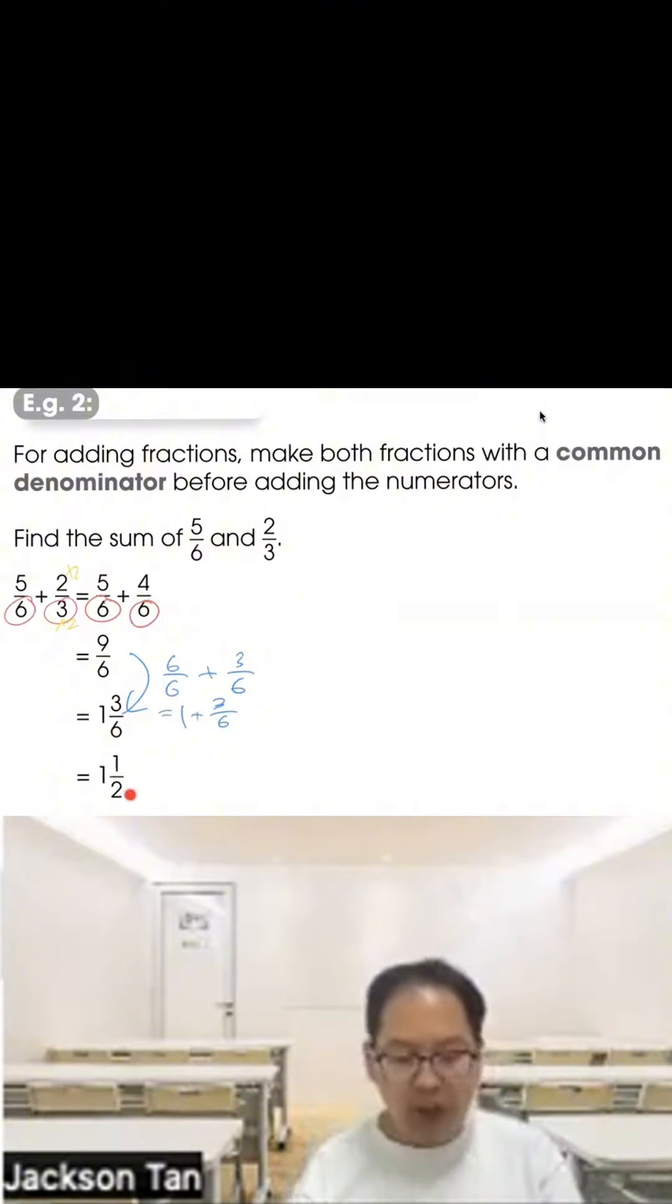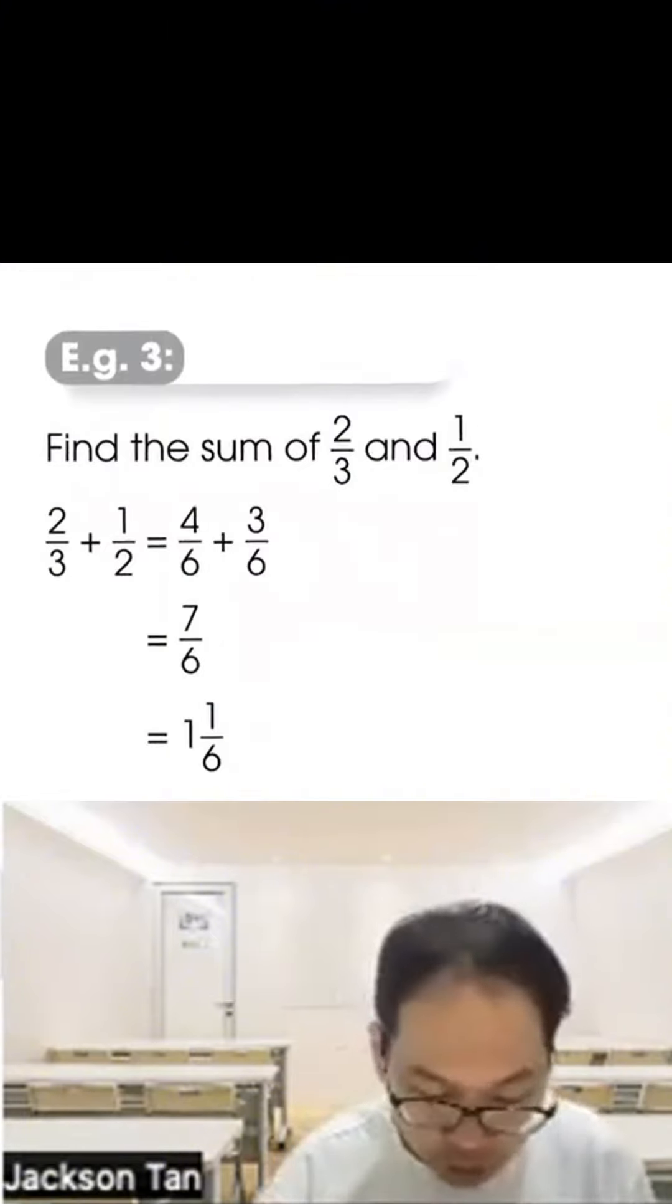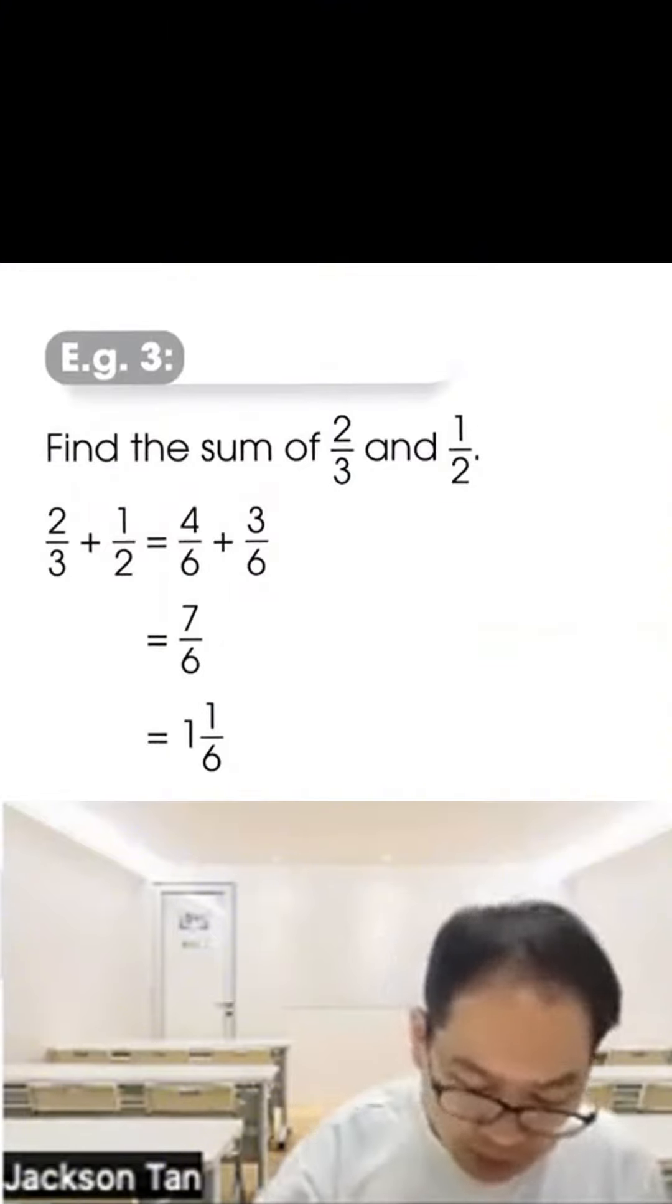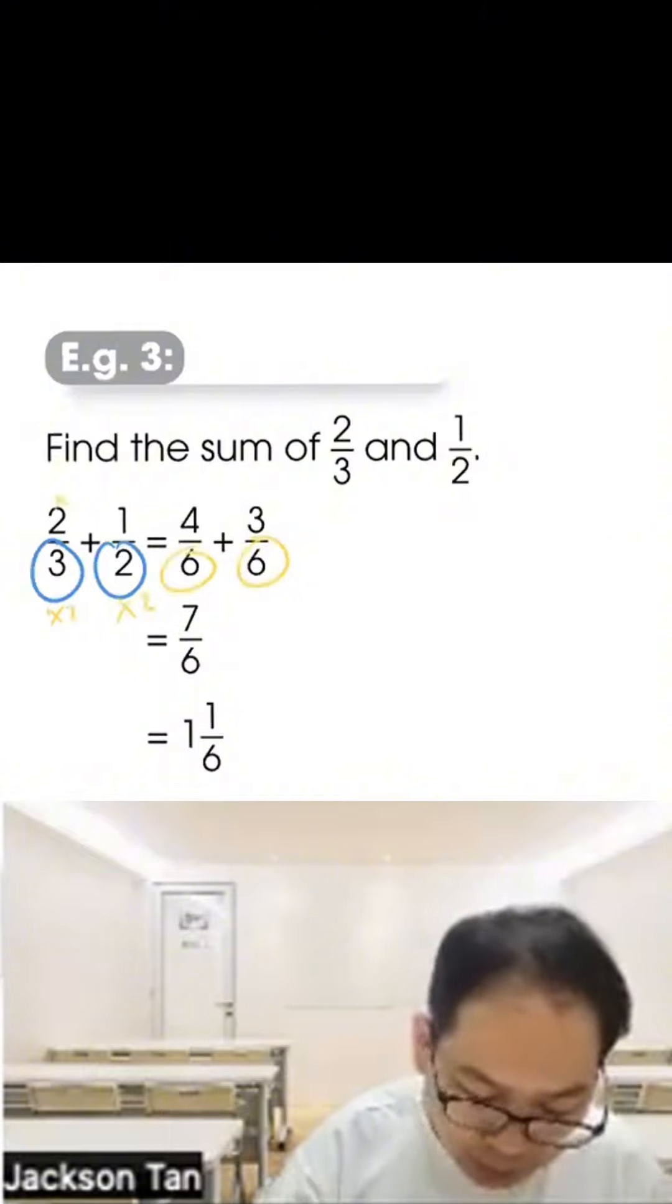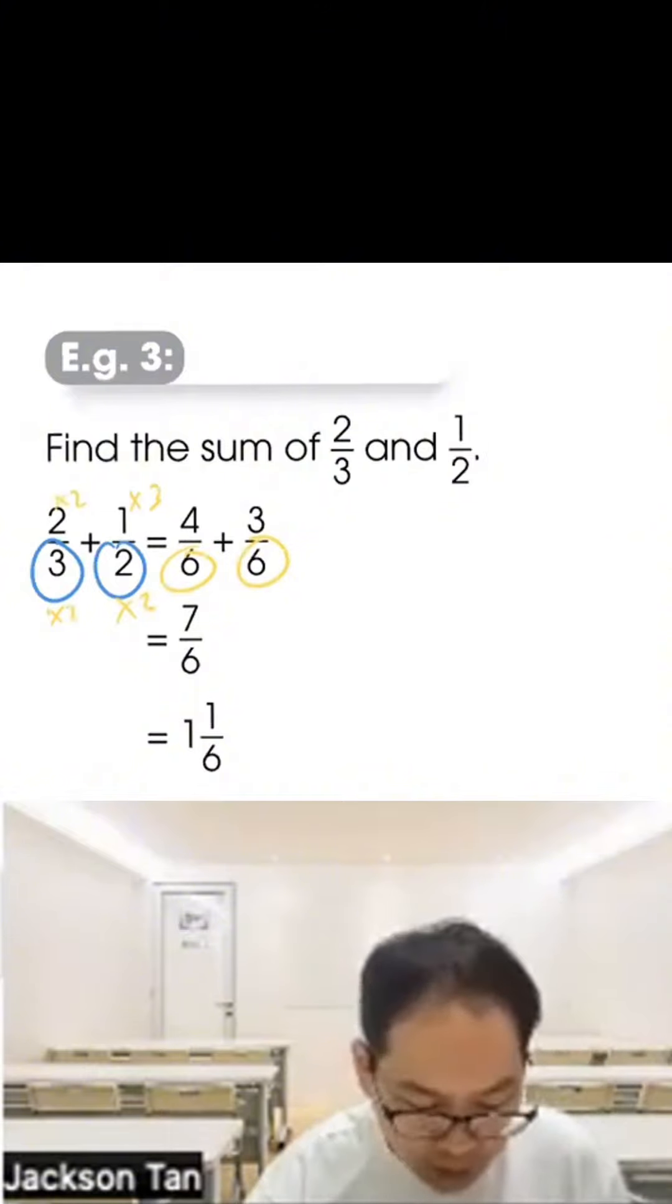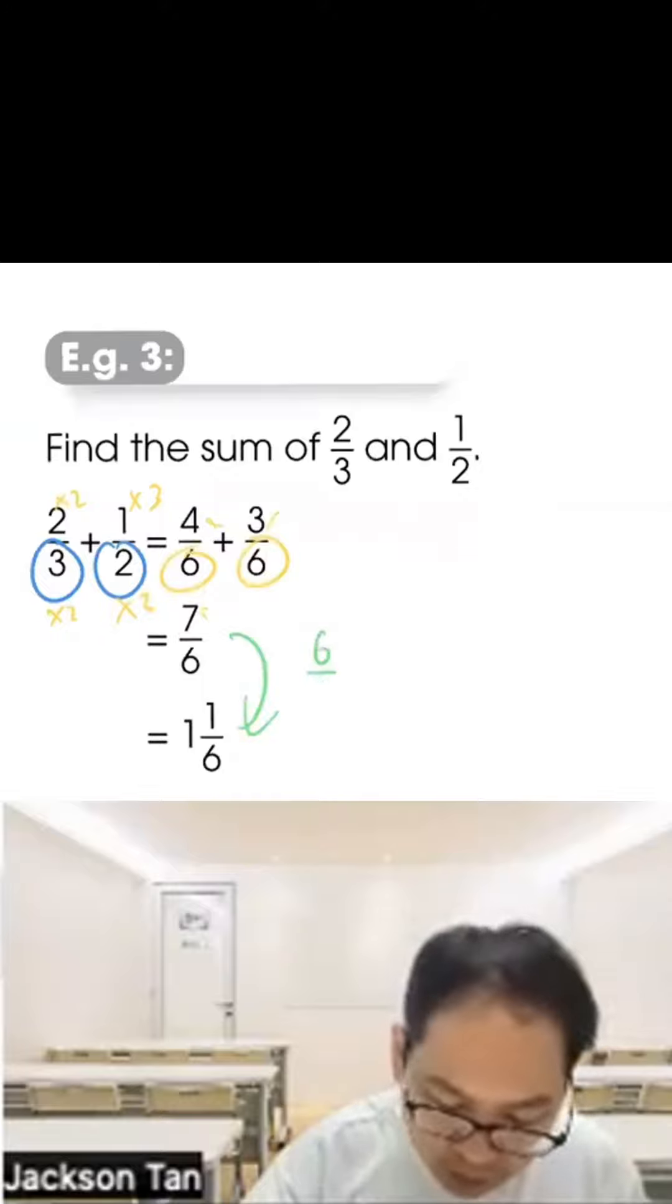Example 3: Find the sum of two thirds and one half. Make the denominator the same. So basically here you times three to get six, here times two to get six. Two times three equals six, one times three equals three, so one plus three equals four. Then convert to simple form. So this is six sixths plus one sixth, equals one whole plus one sixth. That's level two.